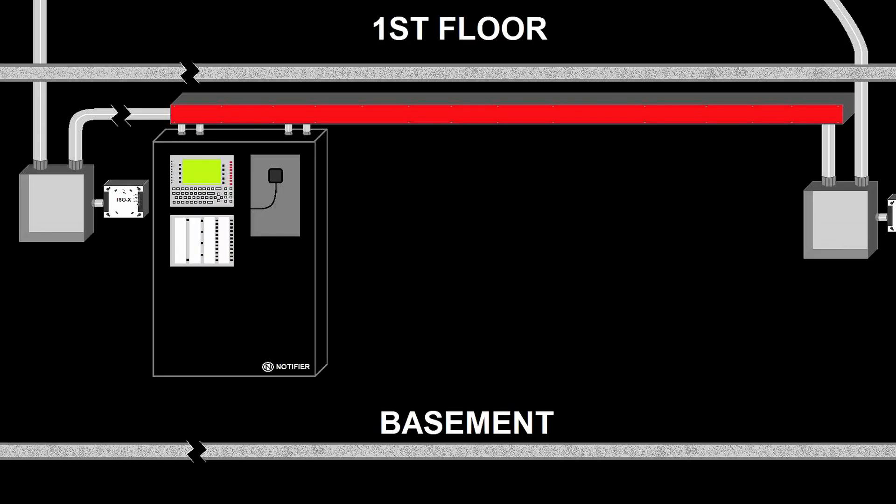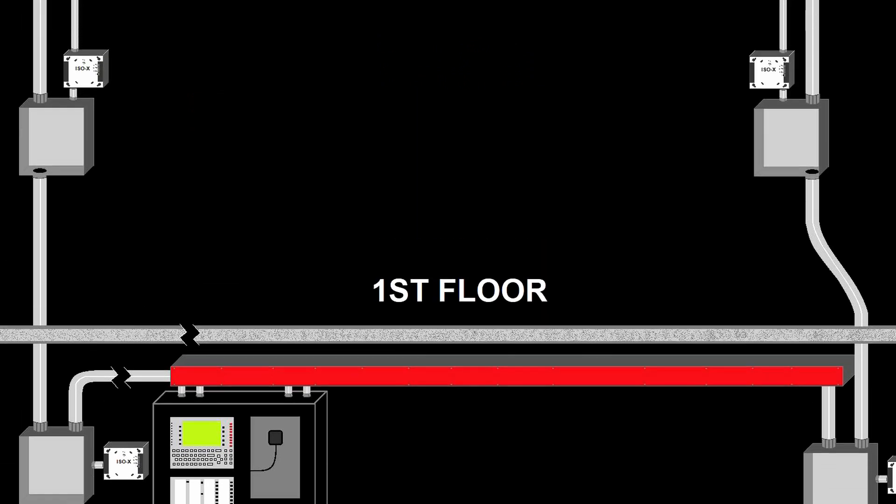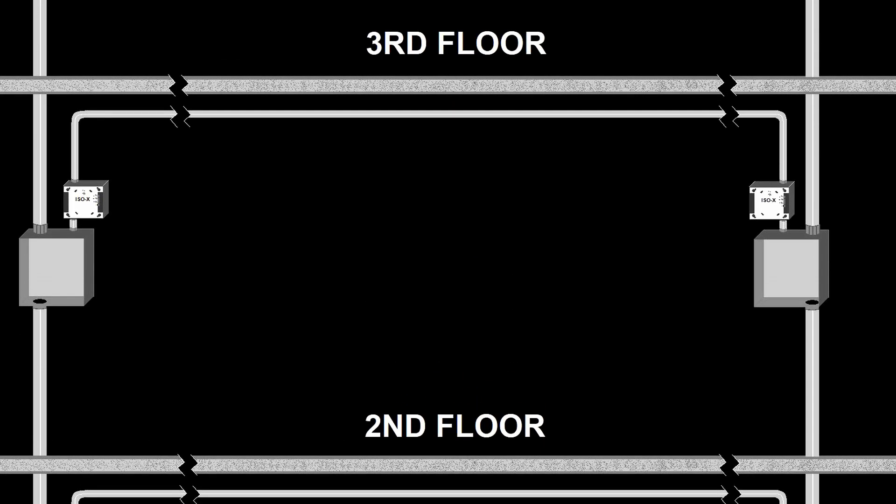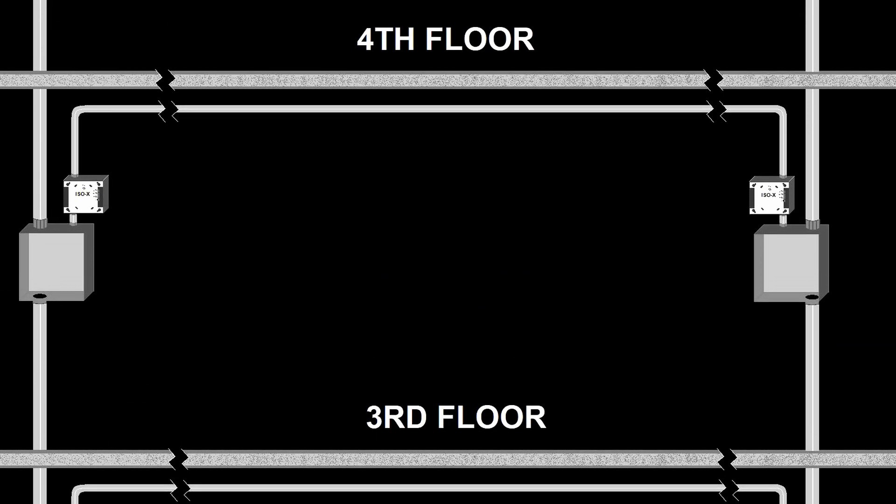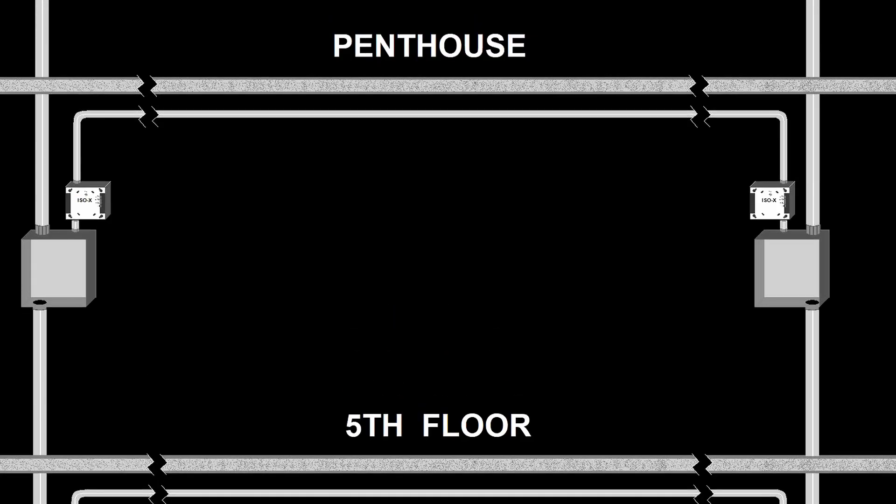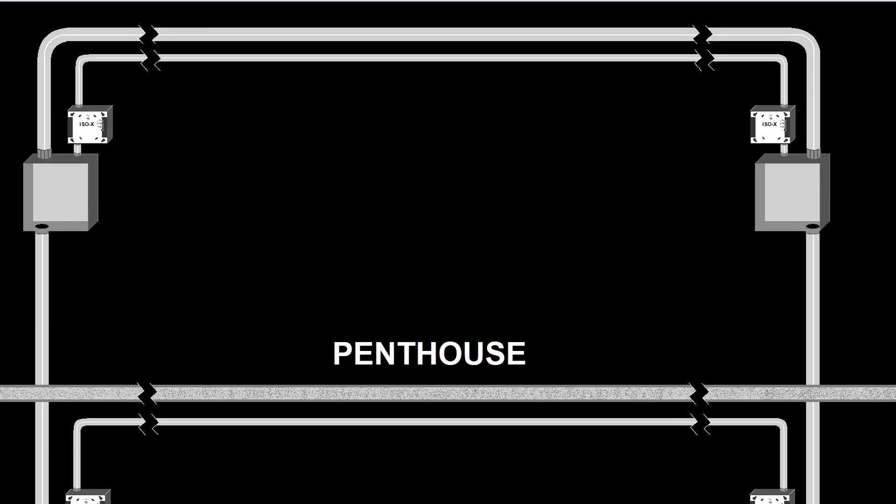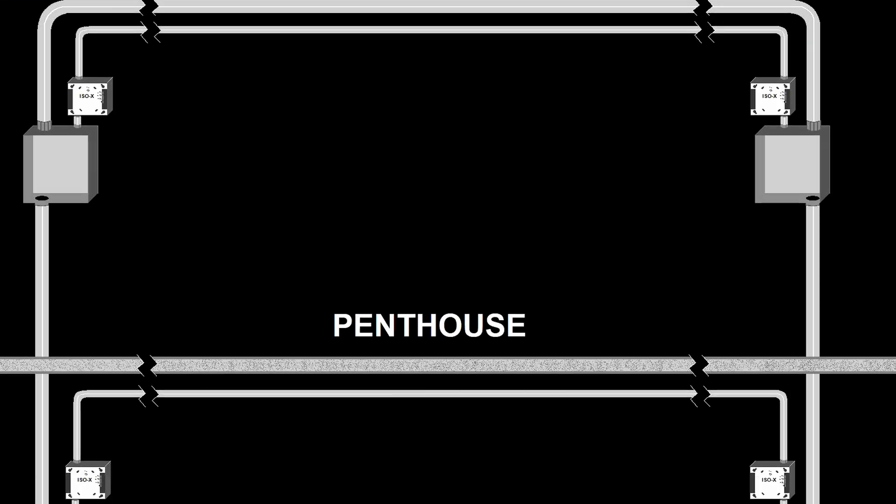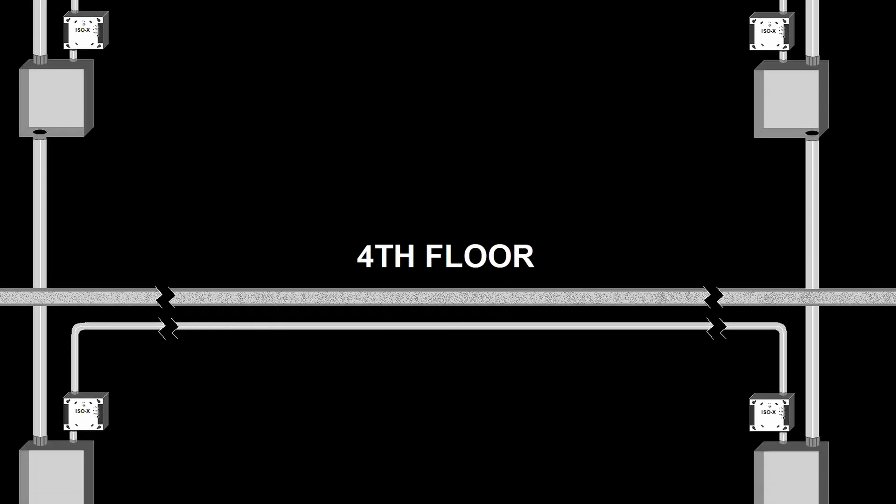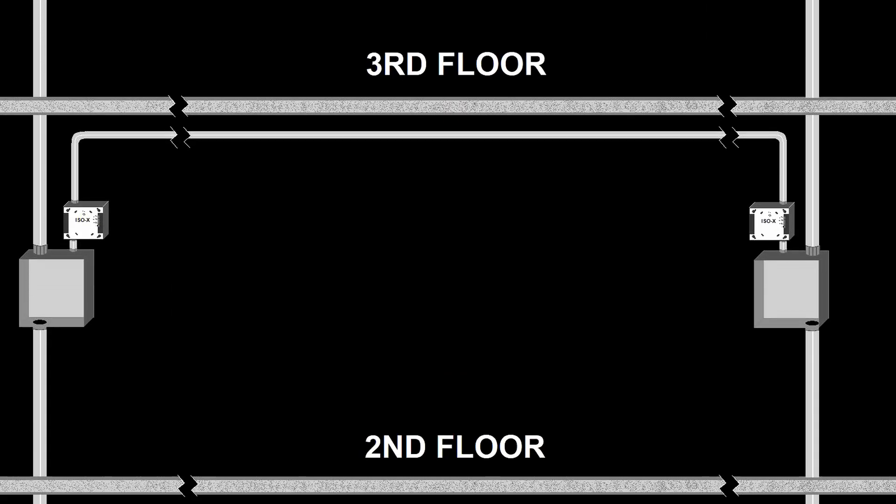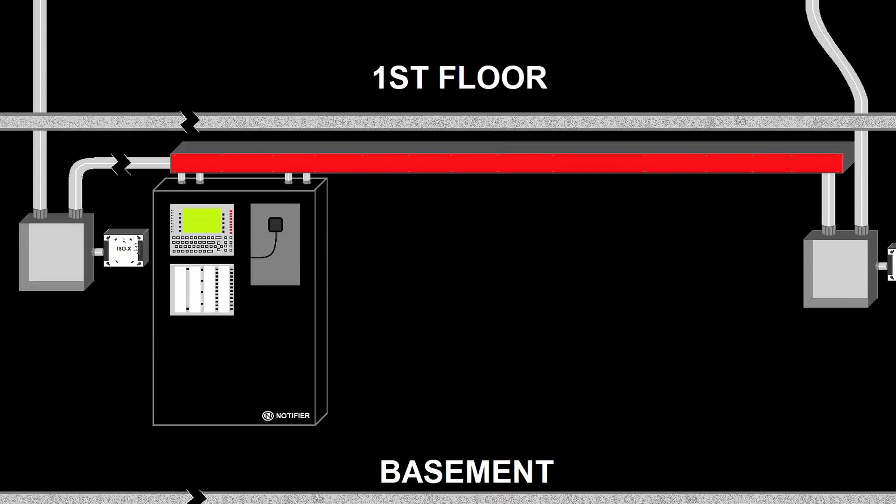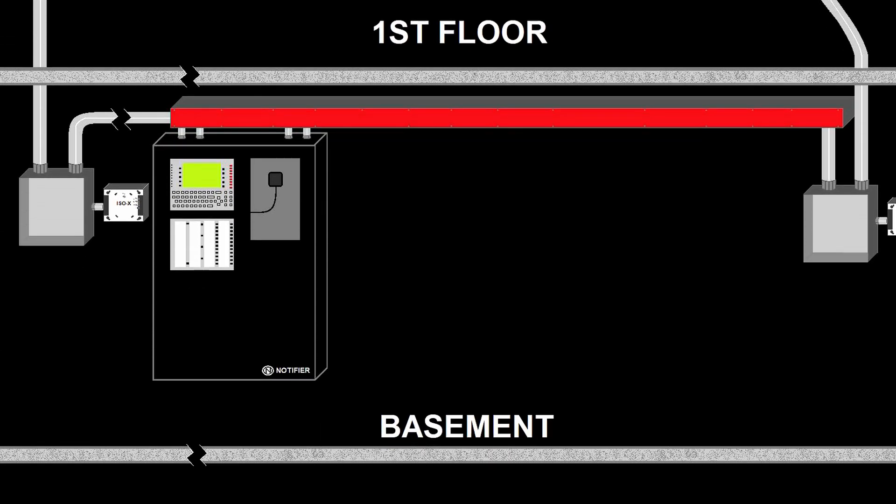The SLC loops will travel up the building through the fire alarm riser closet. When a loop reaches the floor it's covering, it will leave the Hoffman box and enter an isolator module. After the isolator module, it will go into the first device on the circuit and then out of that into the next one and so on until it reaches every device. Then it will go into another isolator module before returning back to the panel through a separate riser closet. As you go to each floor, there will be one less SLC circuit in the Hoffman box than the floor below it had until the penthouse just has one SLC loop.